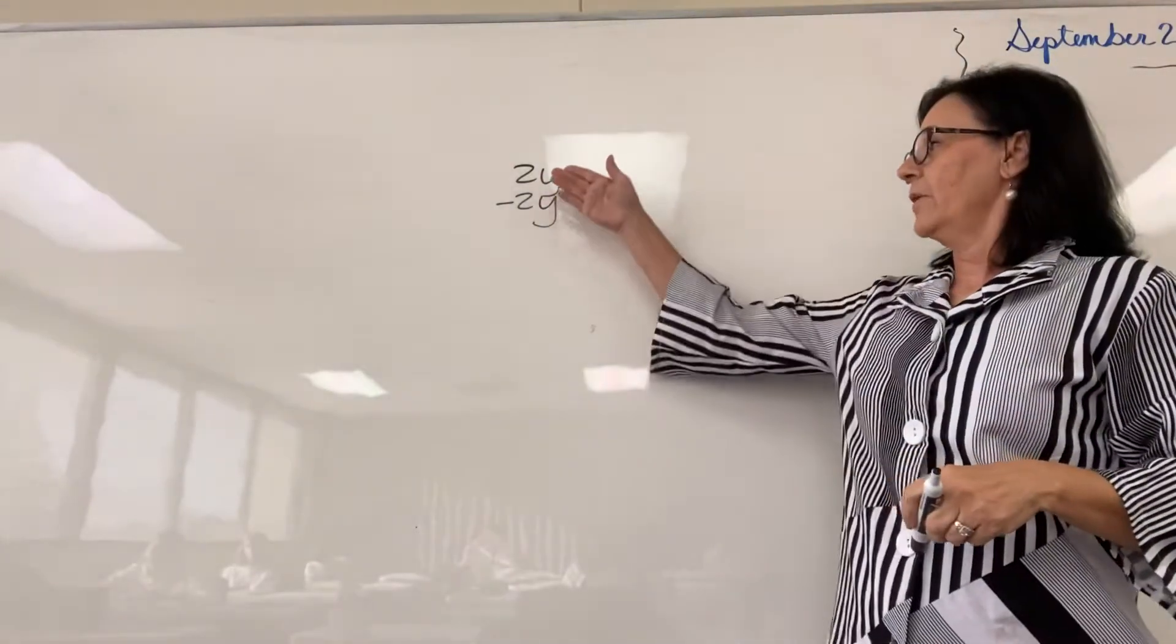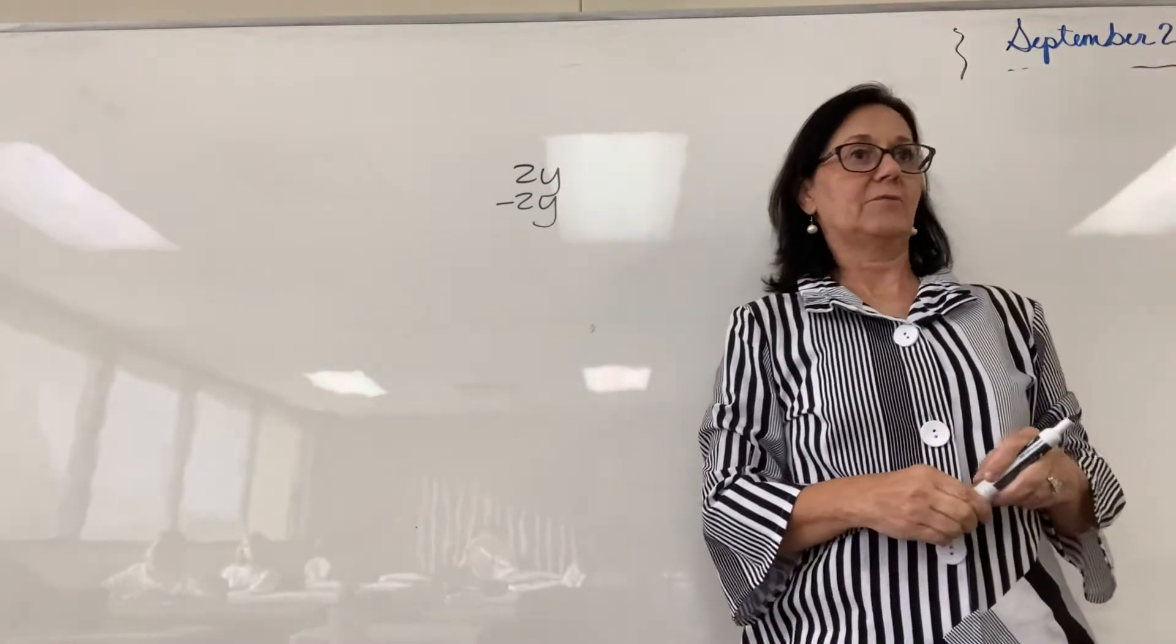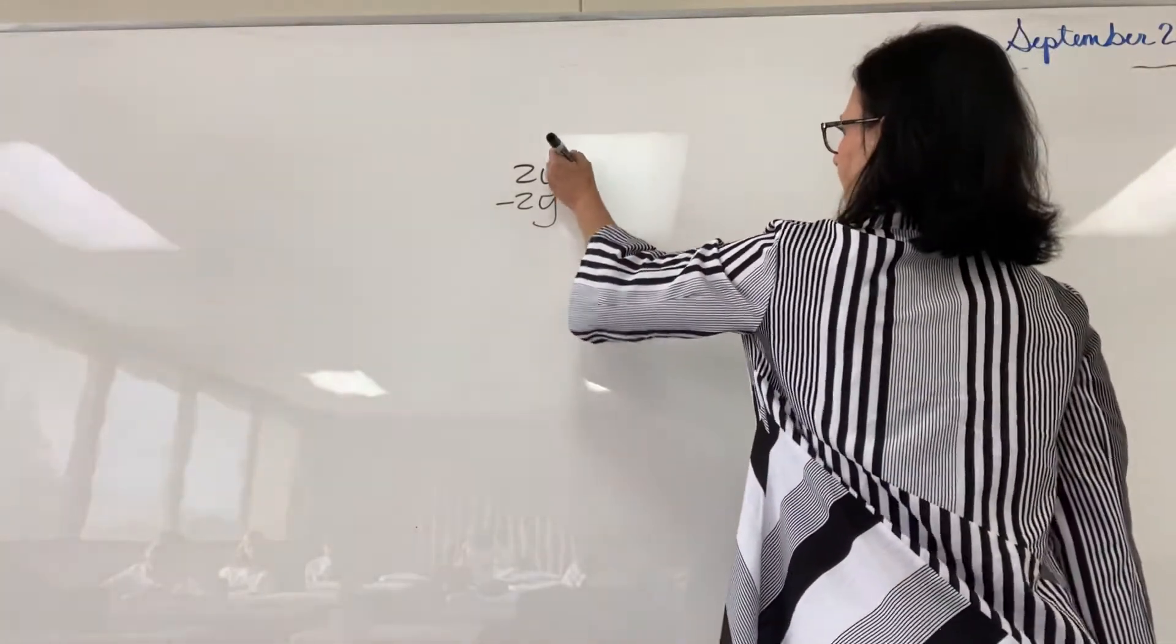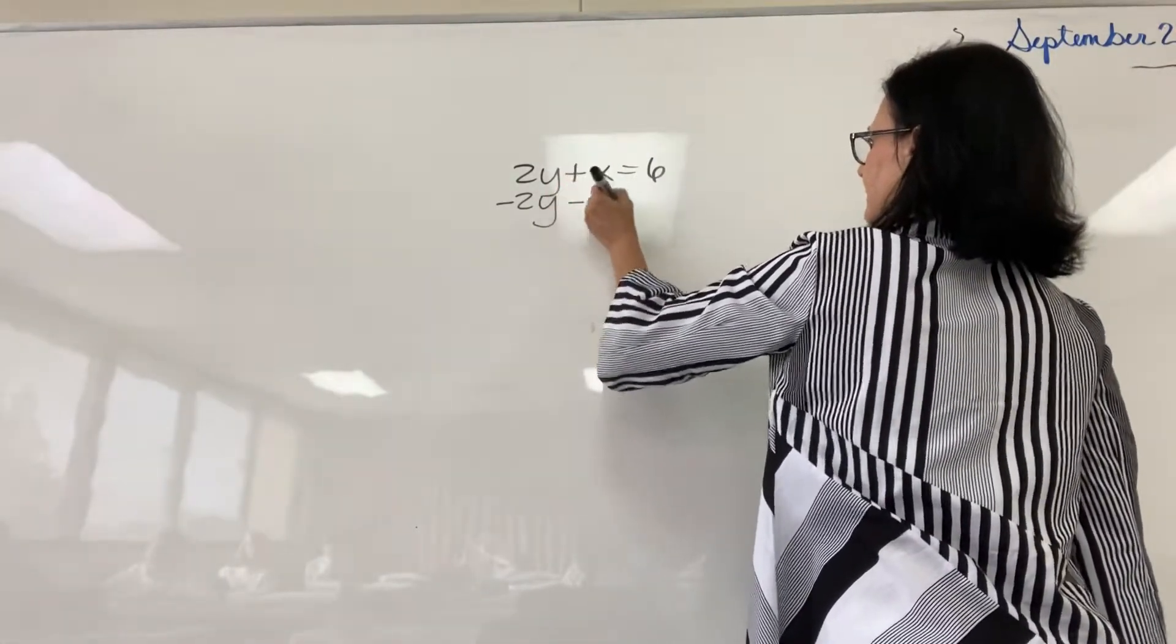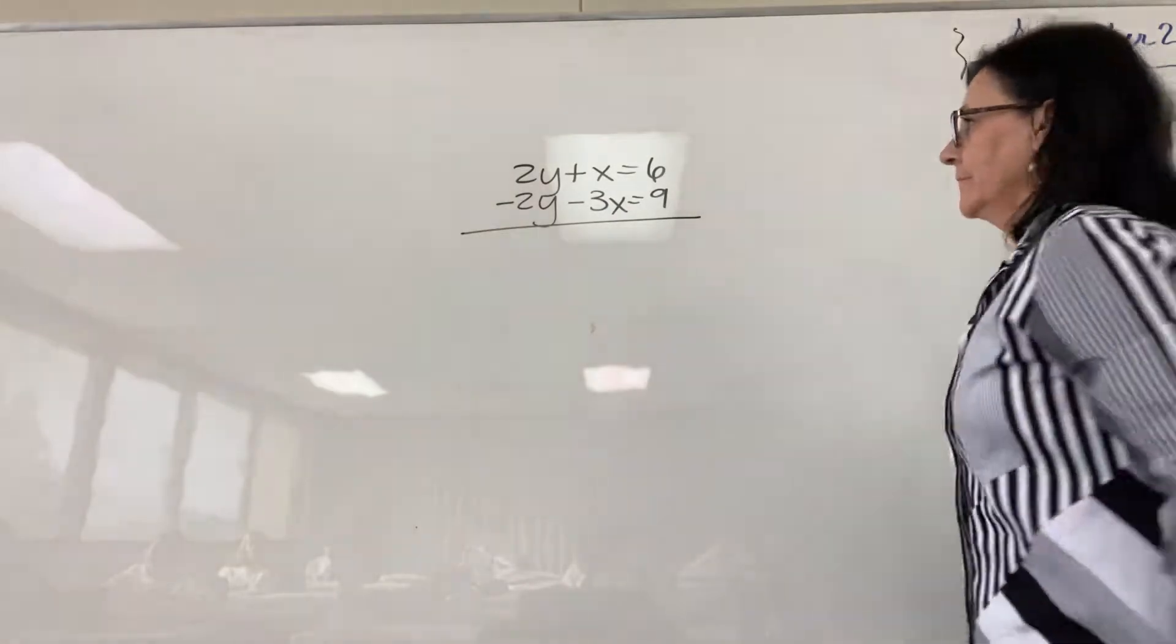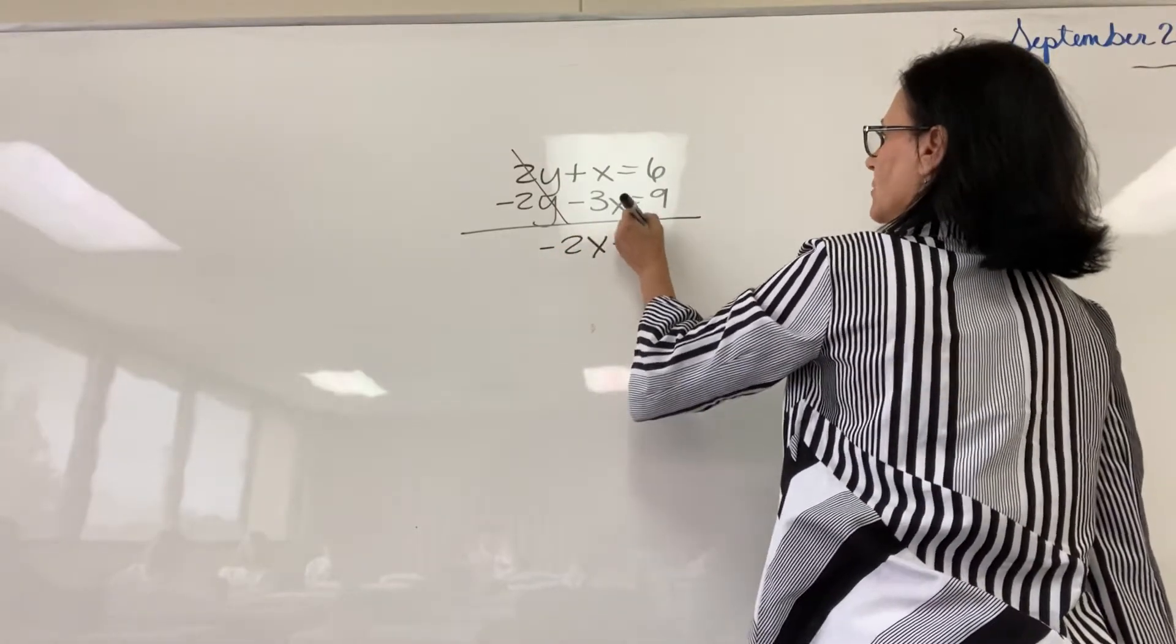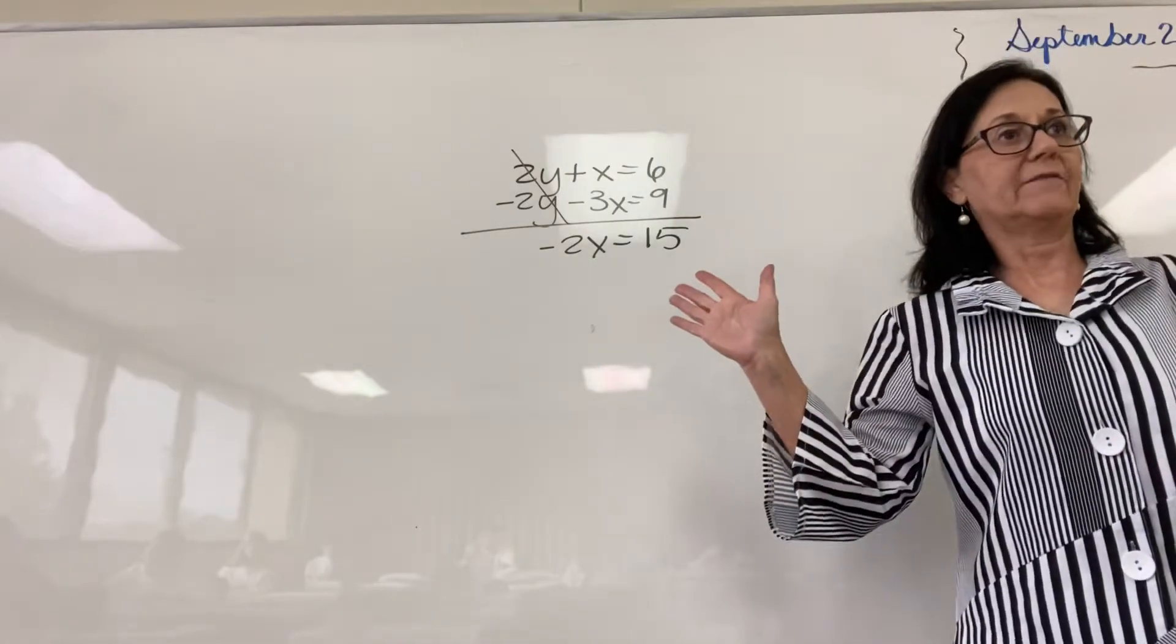So if the first one's 2y, the second one has to be negative 2y. And we're going to add the equations. The y's would eliminate, we have negative 2x equals 15. And then we would divide by negative 2.